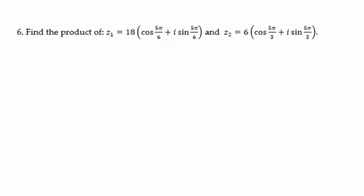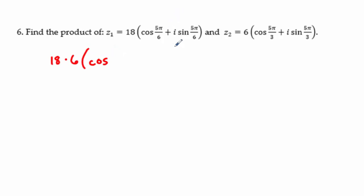Problem 6: find the product. The formulas — which you need to memorize since they won't be given on the test — are: multiply the r's together and add the angles. So we do 18 × 6 and add 5π/6 + 5π/3.